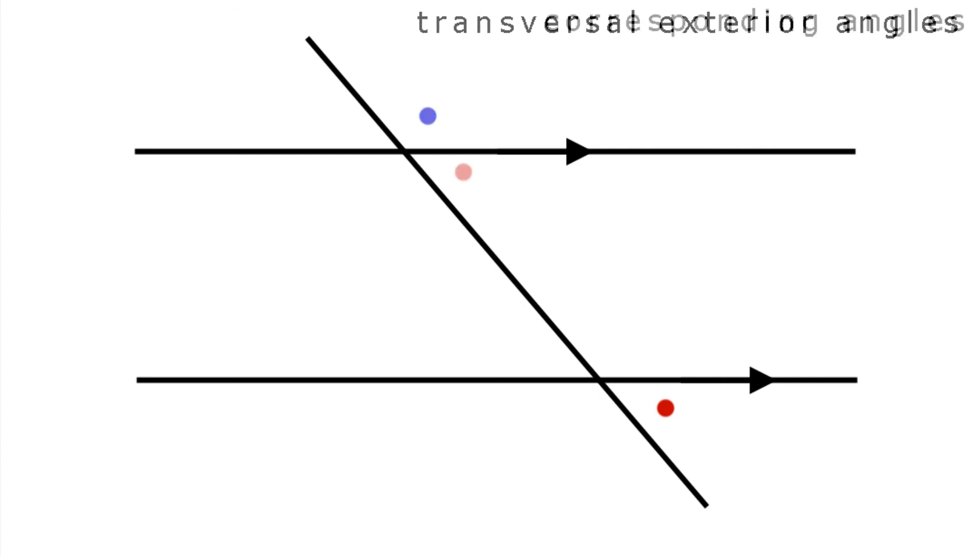Now let me introduce you to the corresponding angles. These are pairs of equal angles that appear on the same side of the transversal, but one is inside the parallel lines and the other is outside. Look at the diagrams and you'll see what I mean. Each pair is on the same side of the transversal, one interior, the other exterior.